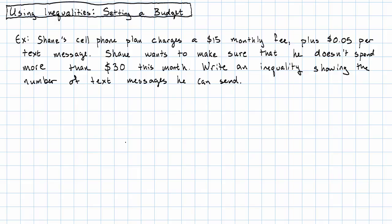So how do we go about that? Reading through the story, the thing that's being limited is the amount Shane spends on his cell phone. And specifically, he wants to not spend more than some amount. That means the amount that he spends is less than or equal to some amount. How much? $30.